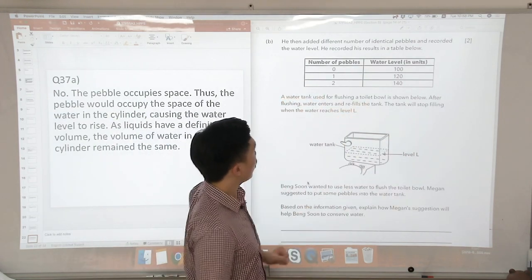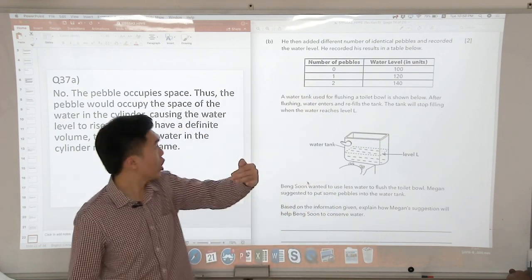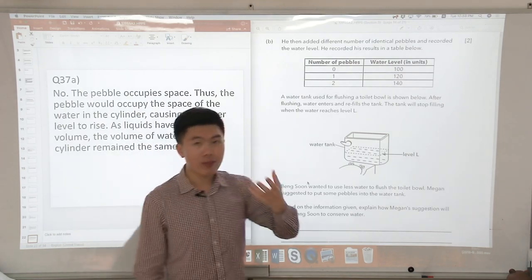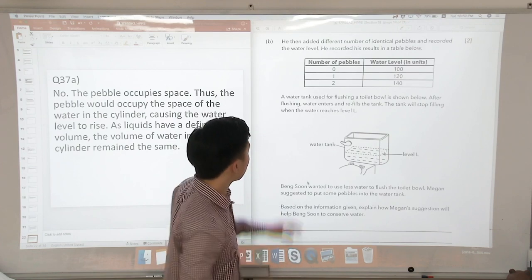So 0 pebbles, 1 pebble, 2 pebbles. What do we see over here? Every pebble that we add, the water level increases by 20 units. So we can then infer that 1 pebble has a volume of 20 units.